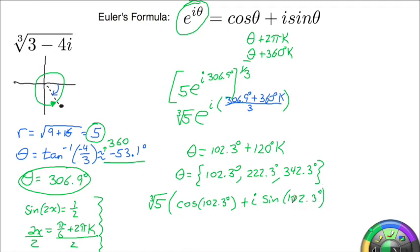To come up with the other two answers, all you have to do is change the angles to 222 and 342. So the cube root of 3 minus 4i is going to be the cube root of 5 times cosine of 102.3 for grand total of negative 0.364. I'll just write it as negative 0.36. And then the cube root of the sine of 102.3 is 1.67.